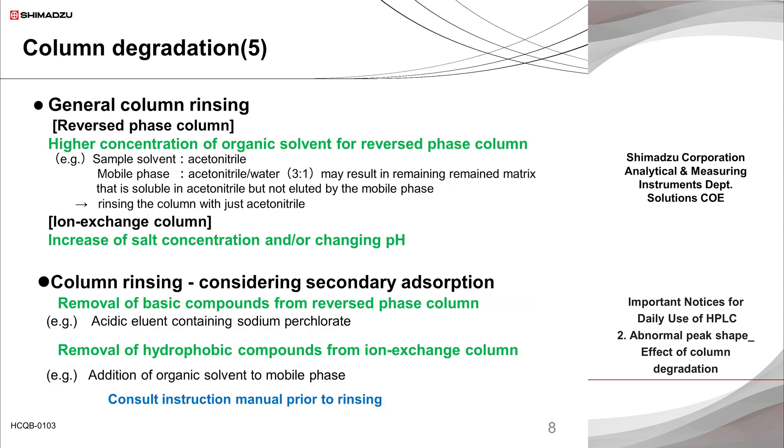As shown here, there are two possible examples for column cleaning. One is to use a mobile phase with a significant diluting power to remove compounds that are strongly retained in the column. The other one is to utilize a secondary interaction to remove compounds adsorbed on the packing material.